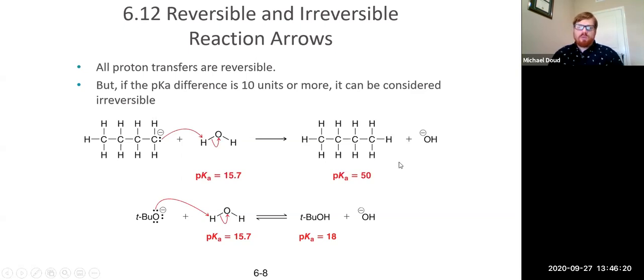Proton transfers are reversible, but if the pKa difference is 10 or more, it can be considered irreversible. For example, here we have a carbon ion in water. The pKa of water is 15.7. The pKa of an alkane is like 50. So this difference in pKa is huge. This is a much, much weaker acid than the water. So that means that the equilibrium is going to heavily lie on the product side. In fact, so much so that you wouldn't expect to really see any of the reactant side. This is going to be an irreversible reaction.